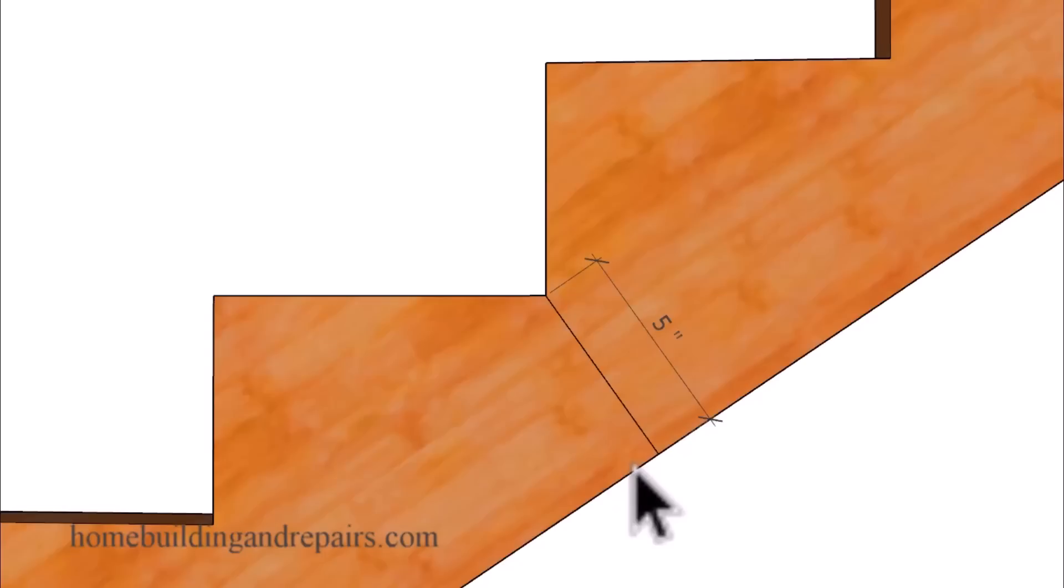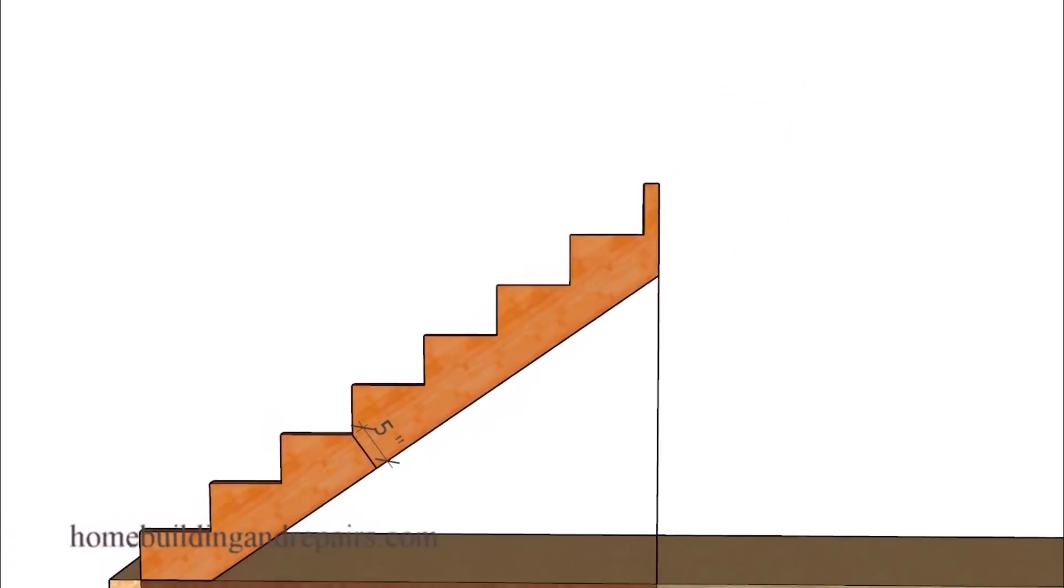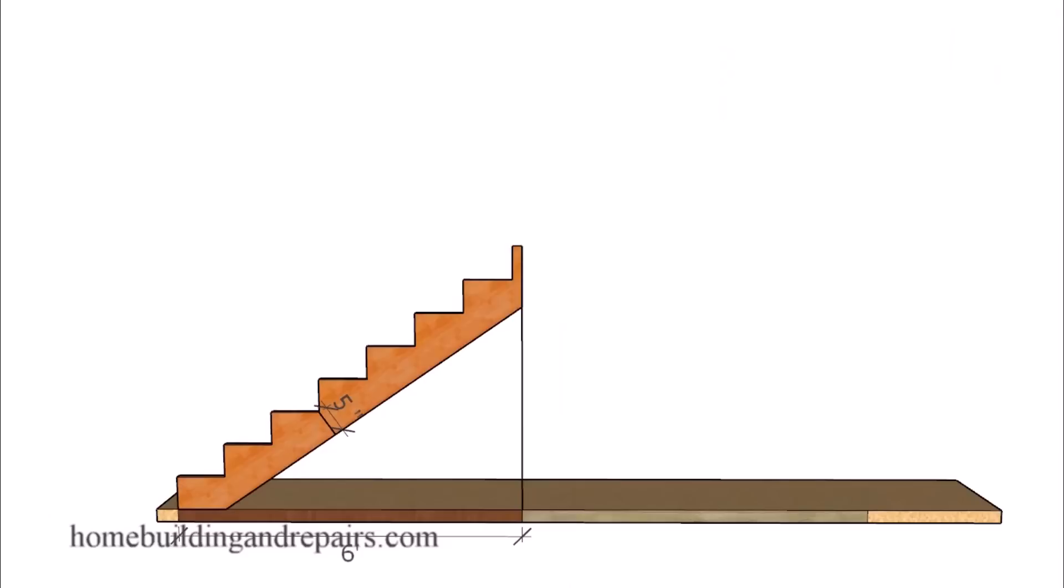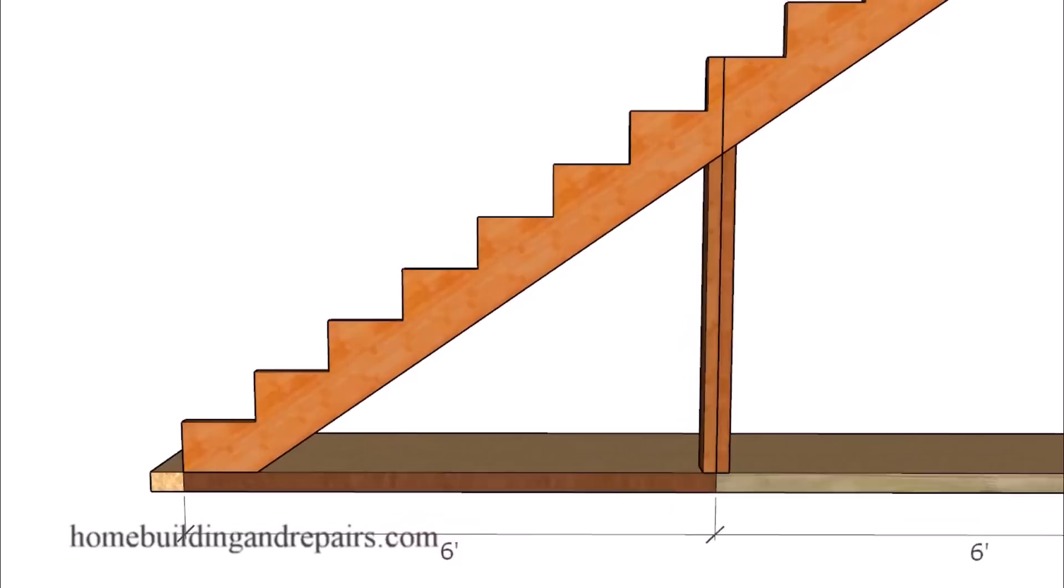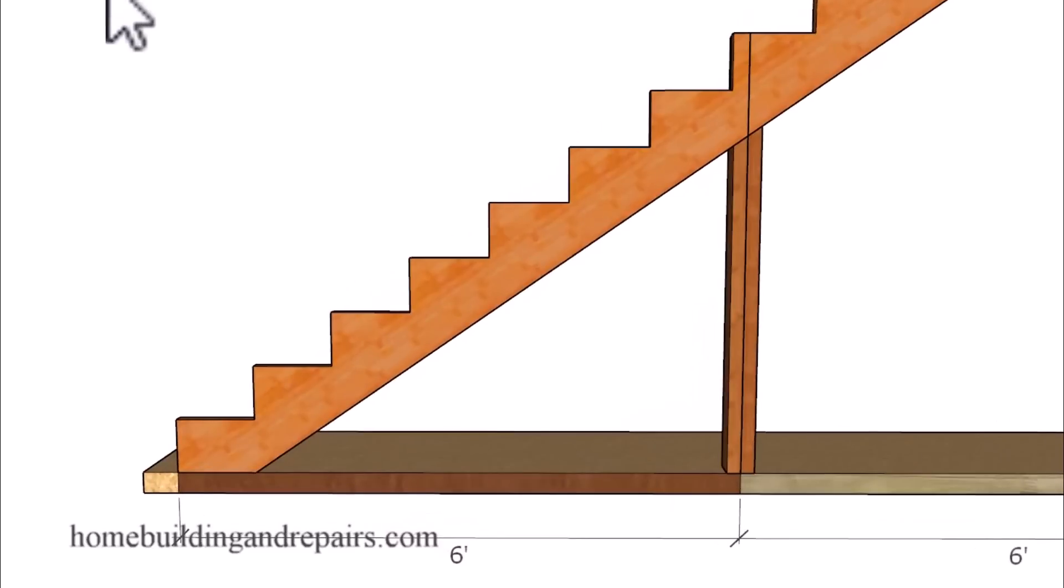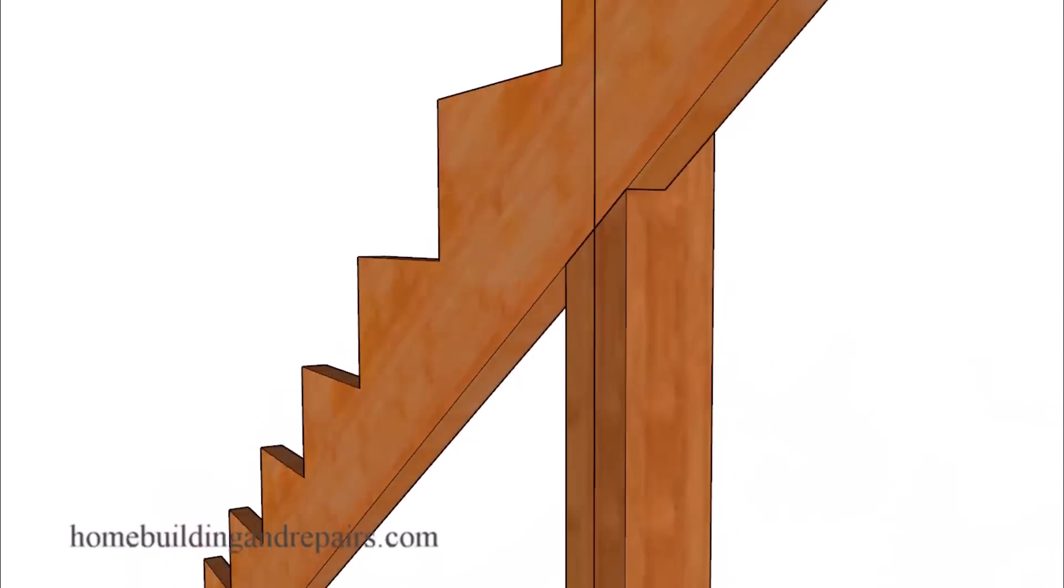And the American Wood Council also suggests using a minimum of 2 by 12 for your stair stringers. So what if you need them to be longer? Then you will need a post supporting the stringer. And that might look something like this. Again the maximum measurement is going to be six feet and you would just simply space the post out accordingly.